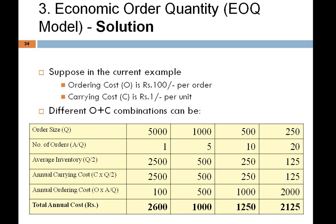Annual carrying cost equals average inventory multiplied by the carrying cost per unit of ₹1. So: 2500 × 1 = ₹2500; 500 × 1 = ₹500; 250 × 1 = ₹250; and 125 × 1 = ₹125. Next, annual ordering cost is ₹100 per order: 1 order = ₹100; 5 orders = ₹500; 10 orders = ₹1000; and 20 orders = ₹2000.